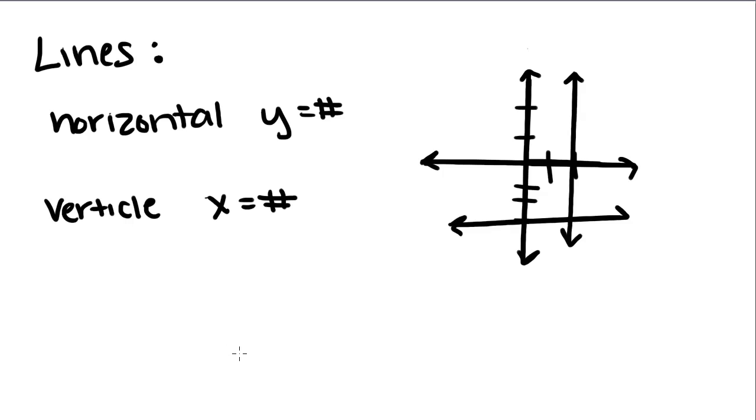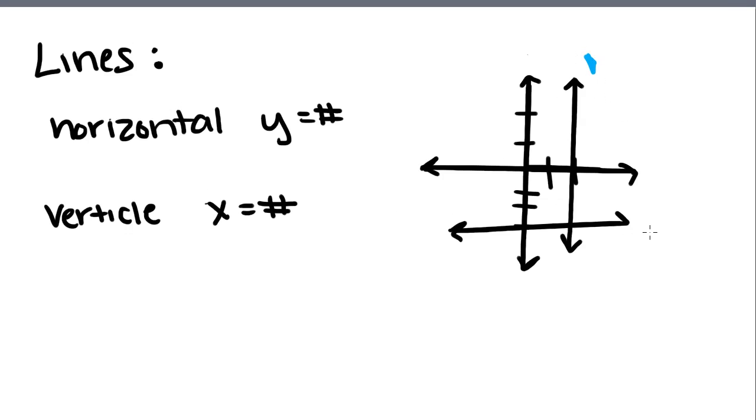When we write the equation of a horizontal line, it's just y equals a number, and for the vertical line, it's x equals a number. We're going to write the equations for these lines. This is line 1, and this is line 2. Don't forget that these lines right here, these are just the axes.